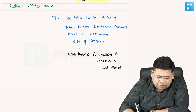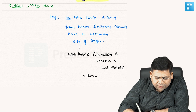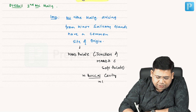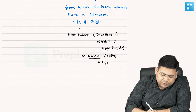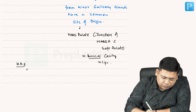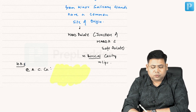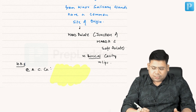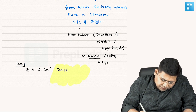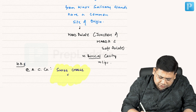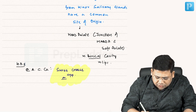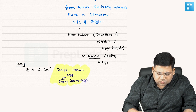Other sites include the buccal cavity, lips, and alveolus. On histopathological examination (HPE), adenoid cystic carcinoma gives a classical Swiss cheese appearance, also described as a snowstorm appearance. If Swiss cheese is not given in the options, you can mark snowstorm appearance.